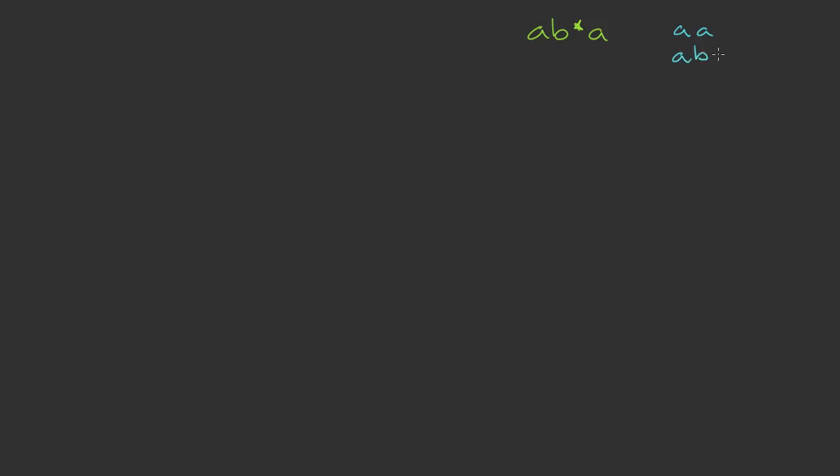So let's say the regular expression you need to convert is A, B-star, A. This means you need to accept an A followed by zero or more B's followed by an A. A couple of example strings that you might recognize by this would be AA (because we can have zero B's), ABA, ABBA, and ABBBBA, and so forth.